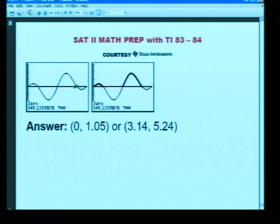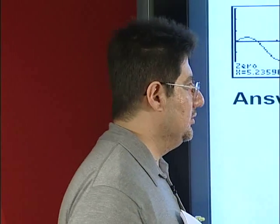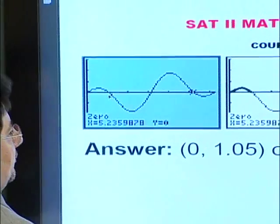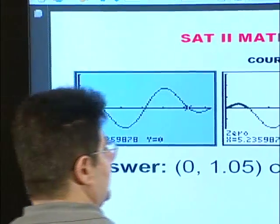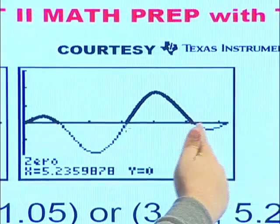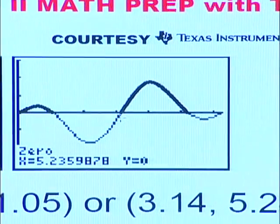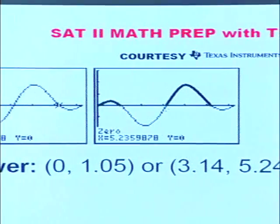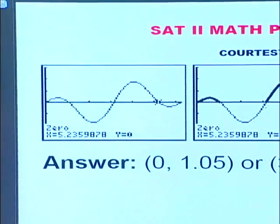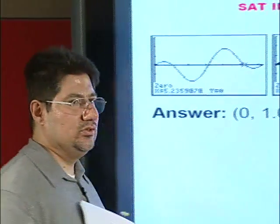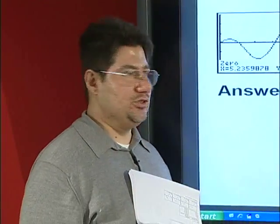And the solution set is x is between 0 and 1.05 or x is between 3.14 and 5.24. Please notice the highlighted portions. There are a few things to note in here: or denotes that it's a union operation.